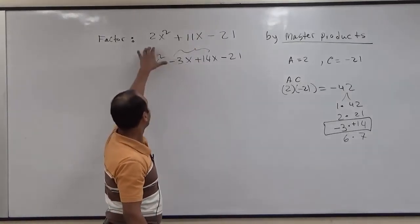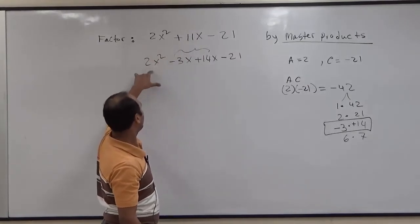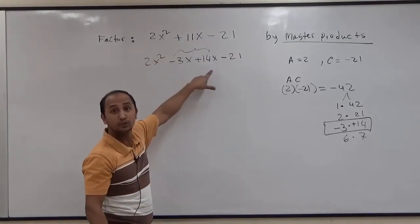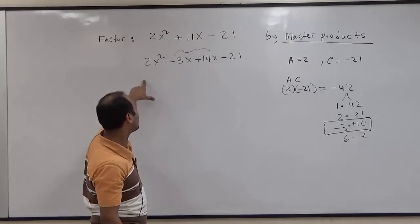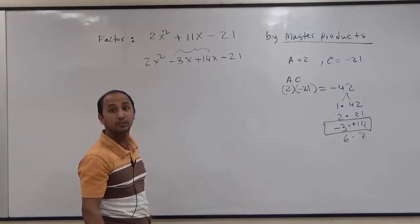So now, from the trinomial, we turned the polynomial into four terms. So when you have a polynomial in four terms, you can factor by grouping.